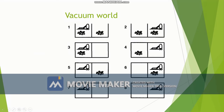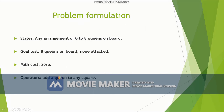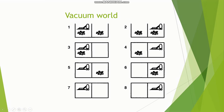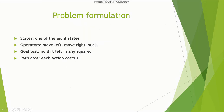The operators for the vacuum world problem are: move left, move right, and suck. The goal test is no dirt left in any of the rooms — states seven and eight represent the goal state. For path cost, each action taken costs one: if the vacuum moves left that's one, if it performs suck that's one more, and so on. For each action, the cost is one.